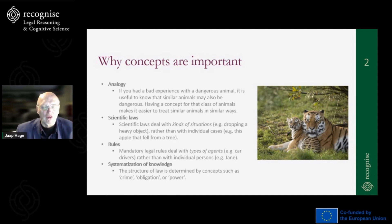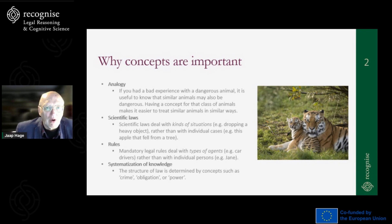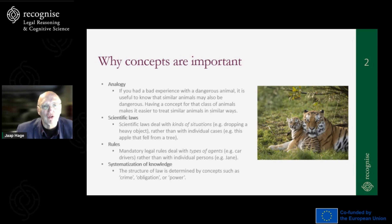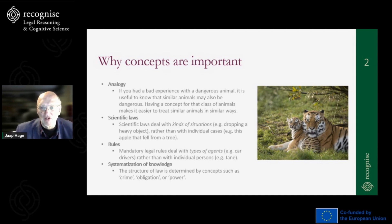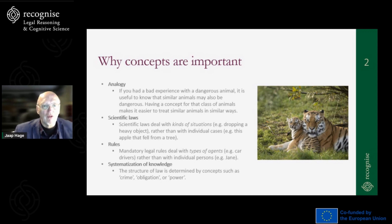There is still another use. In law, we systematize our knowledge — and not only in law, but also in other sciences. The structure of law is determined by concepts such as crime, obligation, or power. So you have criminal law, the law of obligations, and a more general doctrine about having a power, which is important in constitutional law but also in private law. Those concepts structure the domain and make it easier, for instance, to study the law. We have courses on law of obligations, contract law, property law, criminal law, and so on. So concepts are also important for systematizing knowledge.